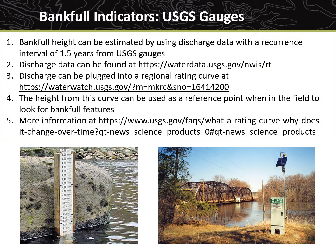Another way to estimate bankfull height is to use data from USGS gauges. This method is only available where consistent gauge data are present but can be very useful where data exists. Before data are taken in the field, bankfull height can be determined in the office on the USGS website at waterdata.usgs.gov by calculating the discharge with a recurrence interval of 1.5 years. Then, a regional rating curve can be created on the USGS website by plugging in the gauge number to generate a curve that relates discharge to gauge height. This height can then be used as a reference point when in the field to look for bankfull indicators.